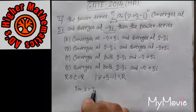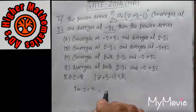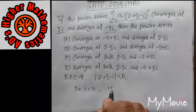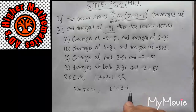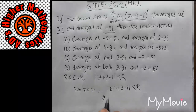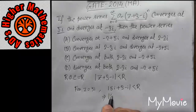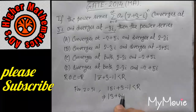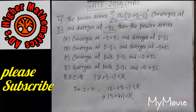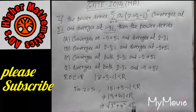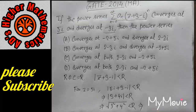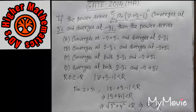For Z equal to 5i: |5i + 3 − i| < R, which gives |3 + 4i| < R. That means root of (3 squared + 4 squared) = 5, so 5 < R.